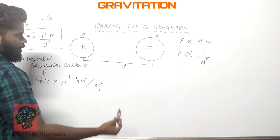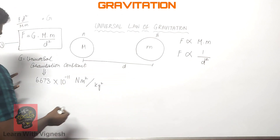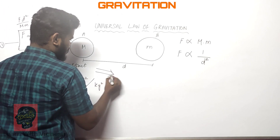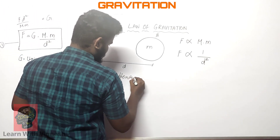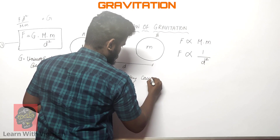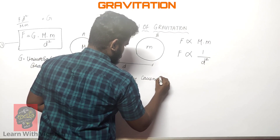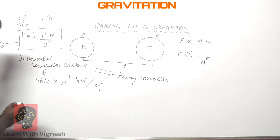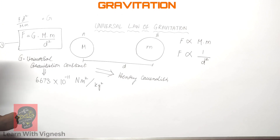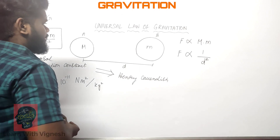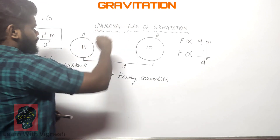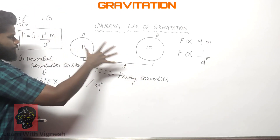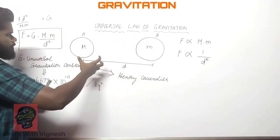G is the universal gravitation constant, and its value is 6.673 × 10 to the power of minus 11 — newton meter square per kg square. Note: the universal gravitation constant was determined by Henry Cavendish.